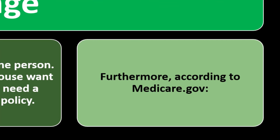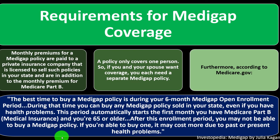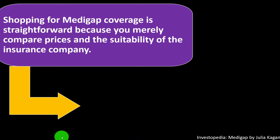According to medicare.gov, the best time to buy a Medigap policy is during your six-month Medigap open enrollment period. During that time, you can buy any Medigap policy sold in your state, even if you have health problems. This period automatically starts the first month you have Medicare Part B medical insurance and you're 65 or older. After this enrollment period, you may not be able to buy a Medigap policy, or if you can, it may cost more due to past or present health problems.